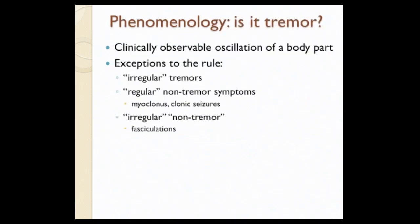When we look at referrals for tremor, the first question is: what is it? As movement disorders specialists, we try to classify things. Tremor is this oscillation of a body part, but there are always exceptions to the rules. You have irregular tremors — a good example being cerebellar-associated tremors, which characteristically have some past-pointing and irregularity. We still call those tremor.